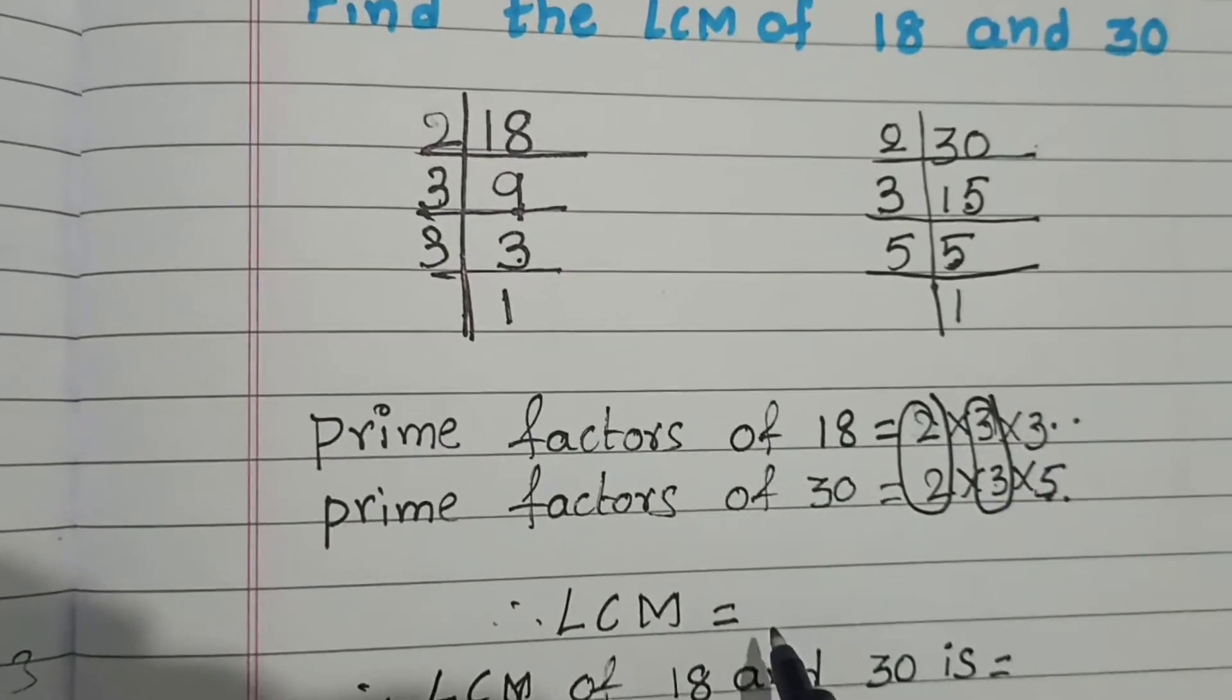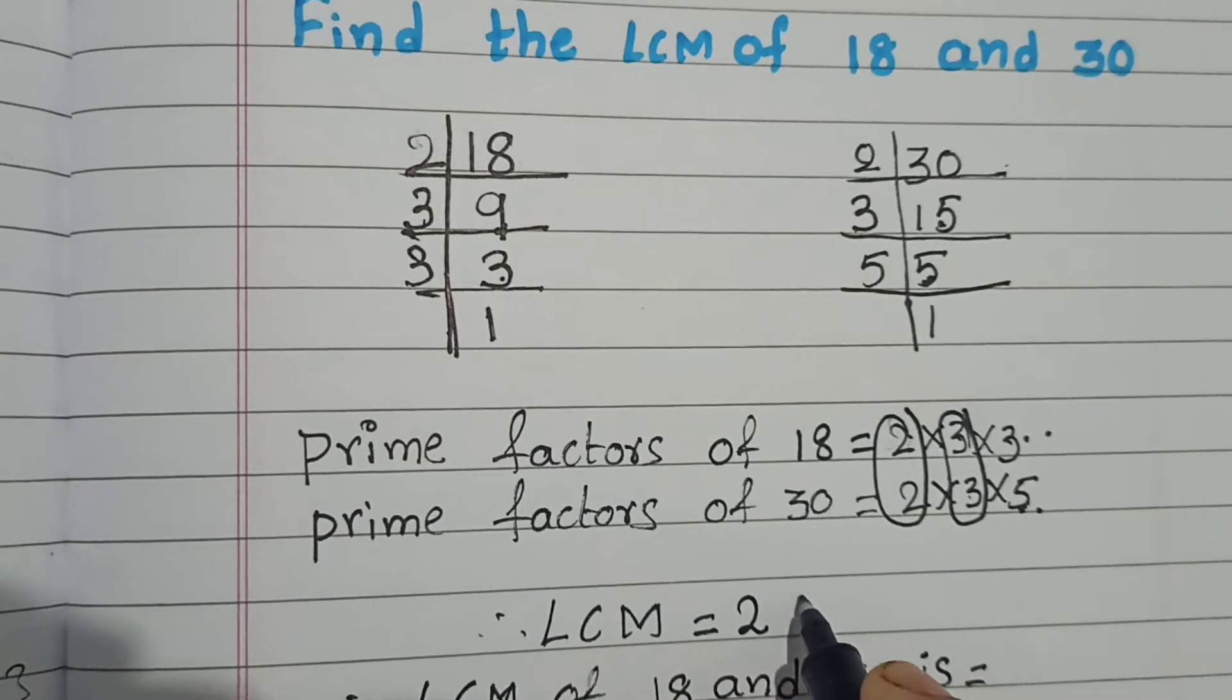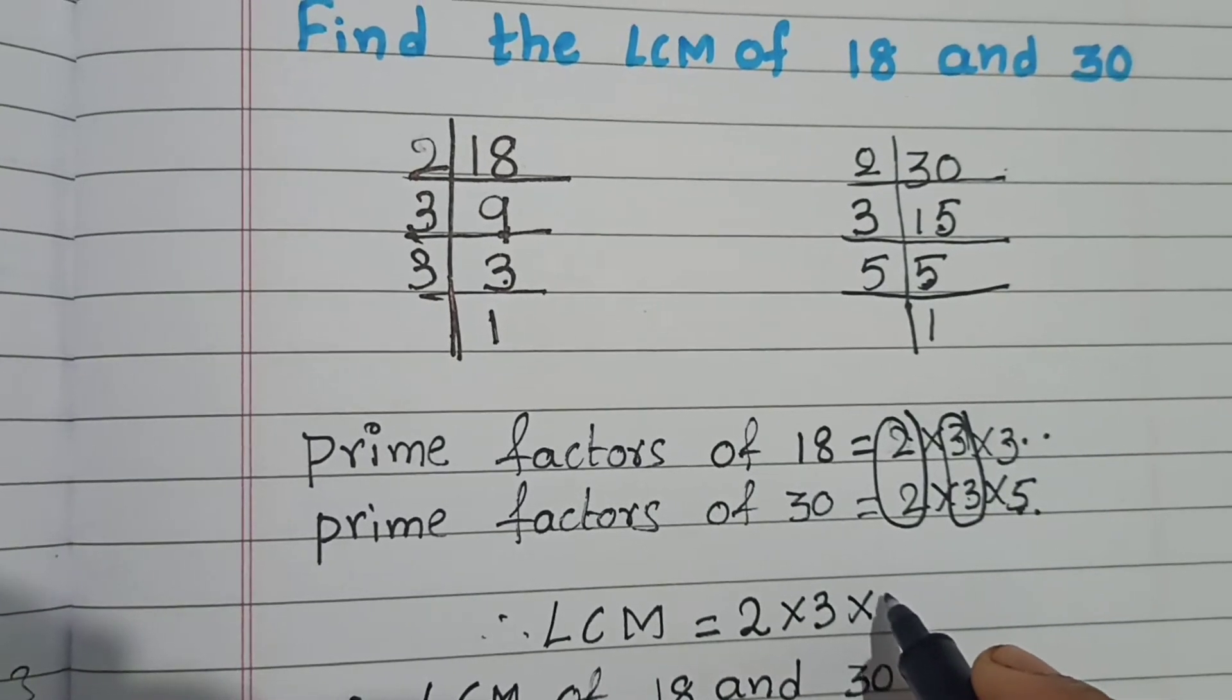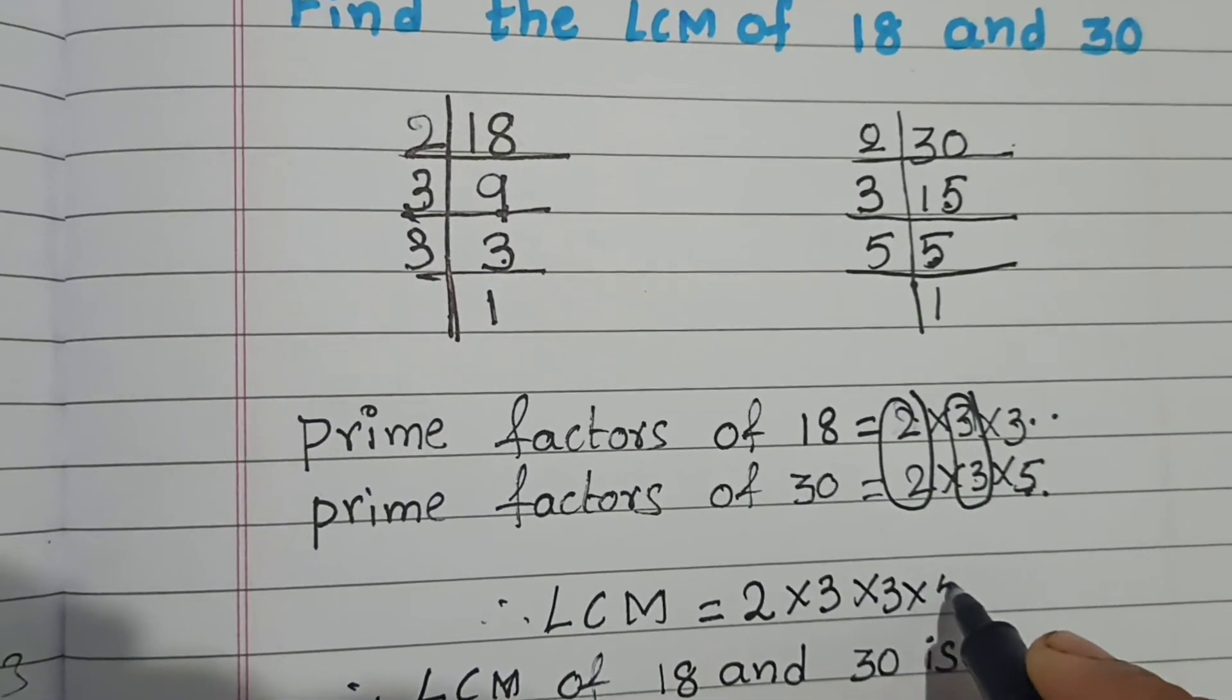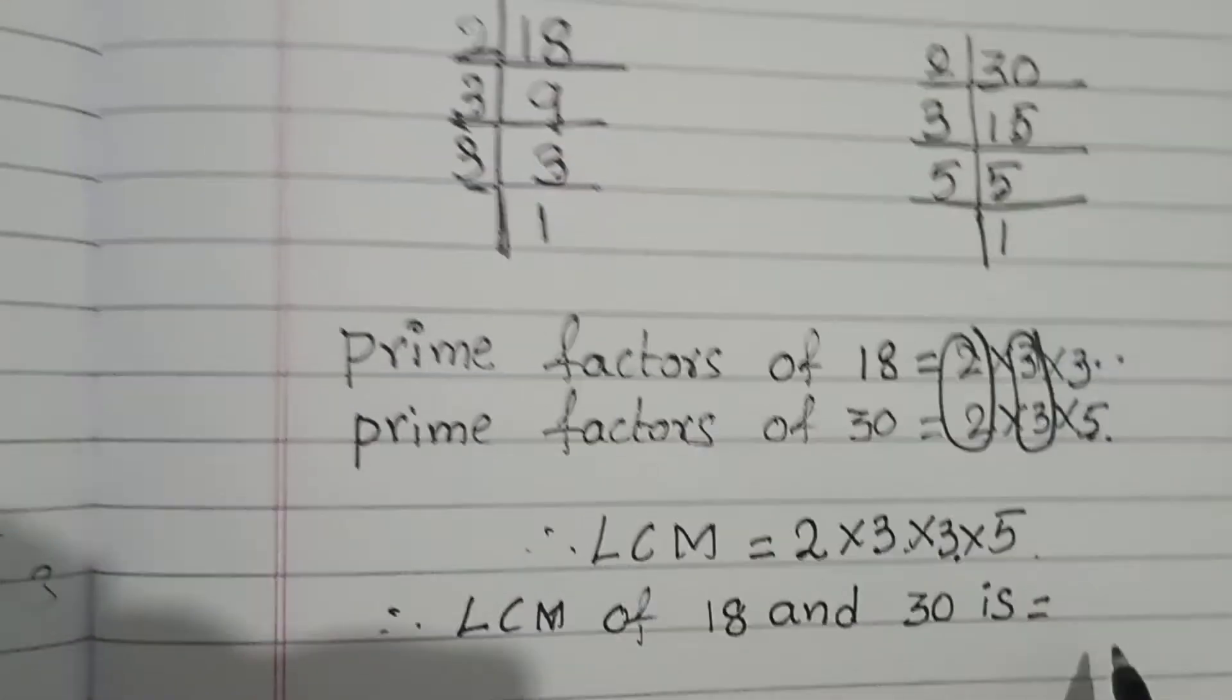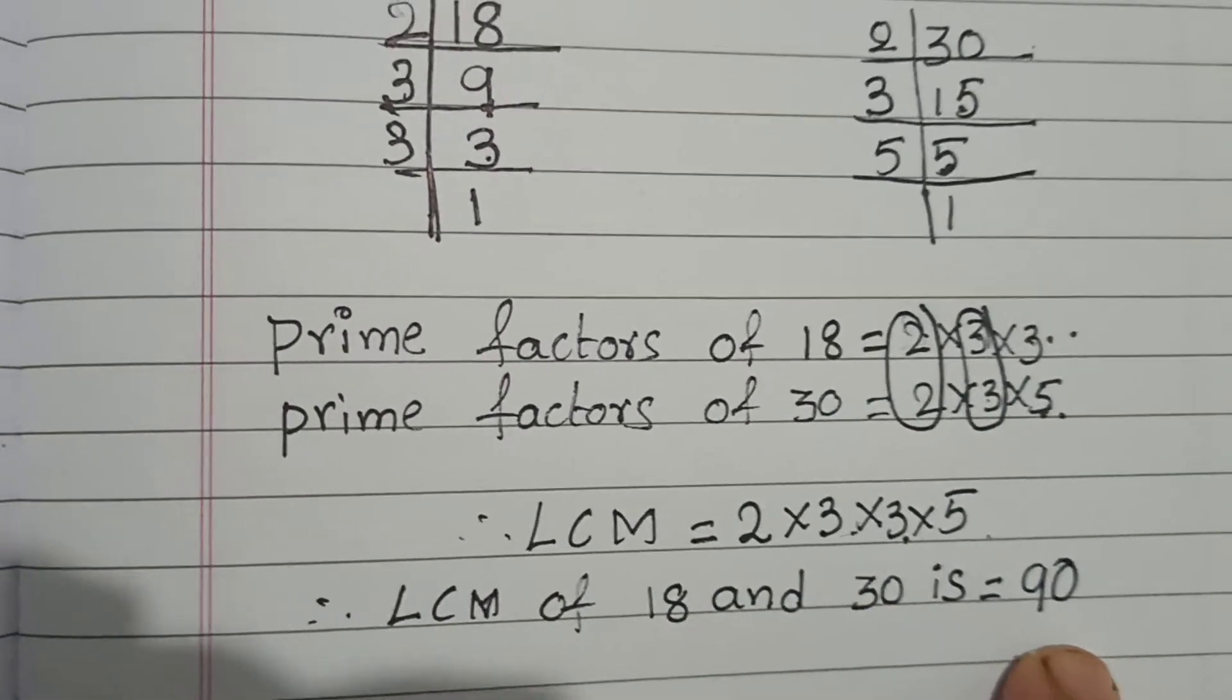LCM is the product of common factors and extra factors. The common factors are 2 is common, 3 is common. These are the common factors. Extra factors, this 3 is extra, 5 is extra. Now multiply. 2 threes are 6. 6 threes are 18. 18 fives are 90. LCM of 18 and 30 is 90.